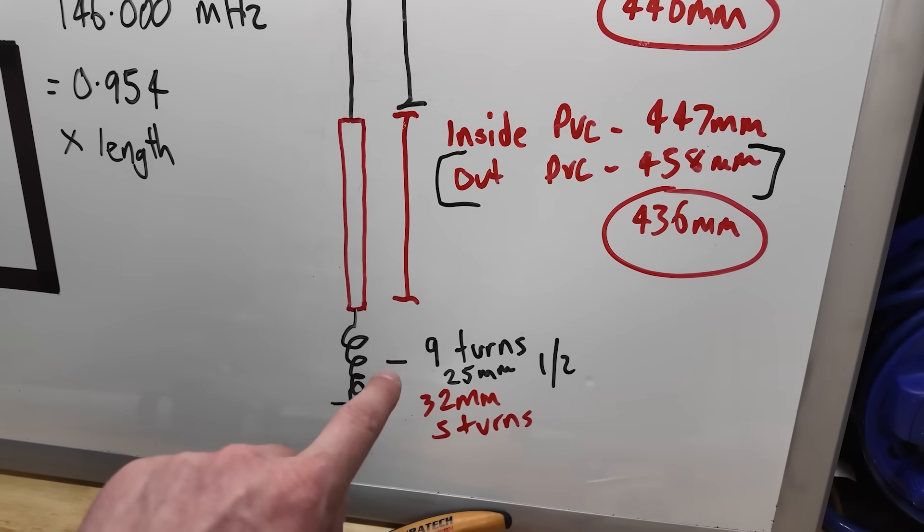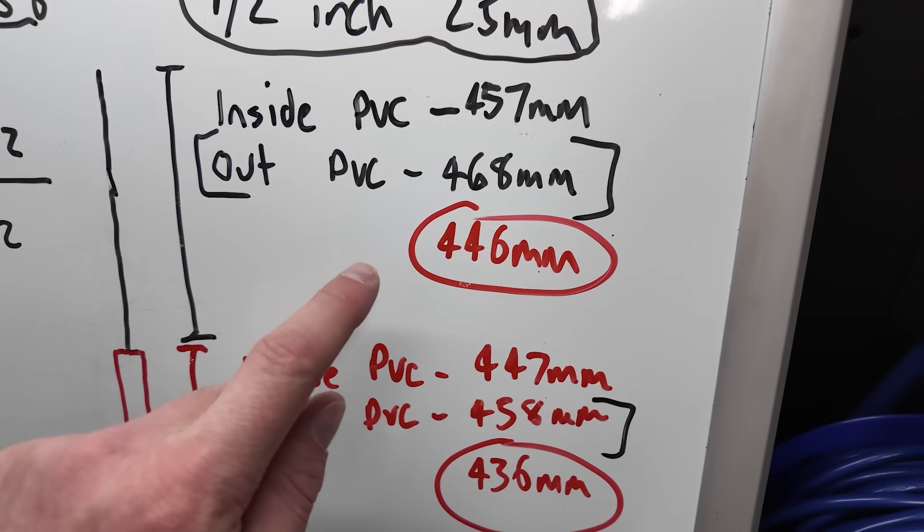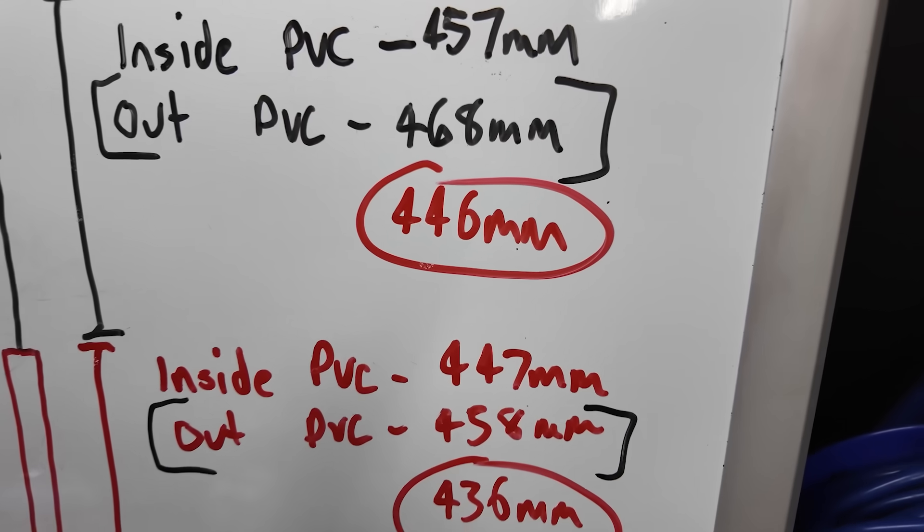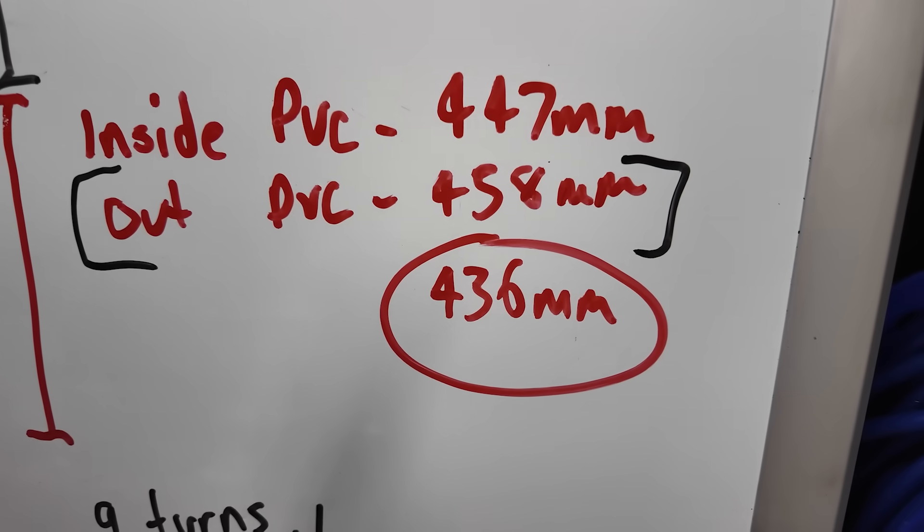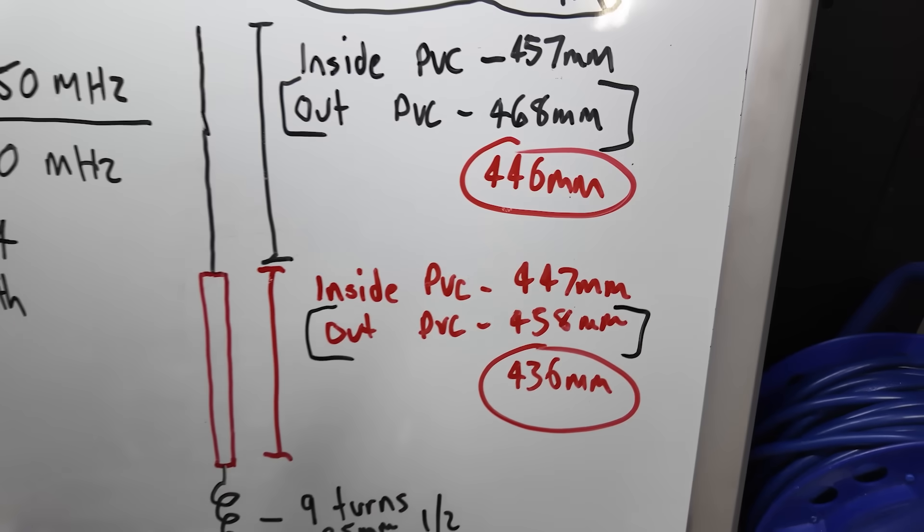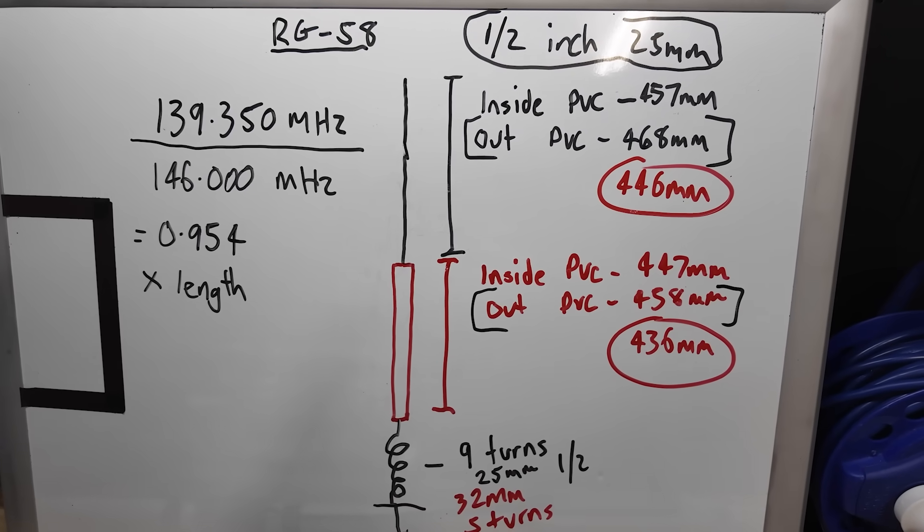So what I'm going to do is I'm going to shorten this antenna. I'm not going to change the coil. I'm going to leave that the same, but I'm going to shorten this antenna, top element 446, bottom element 436, and let's see how it tunes up.